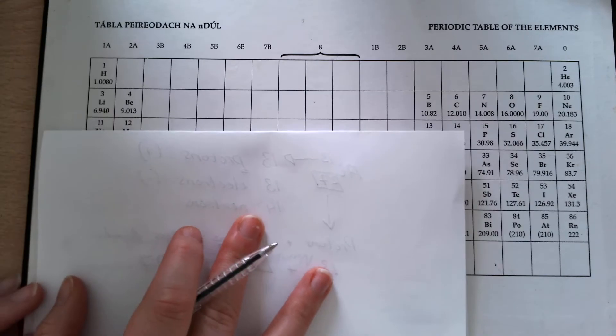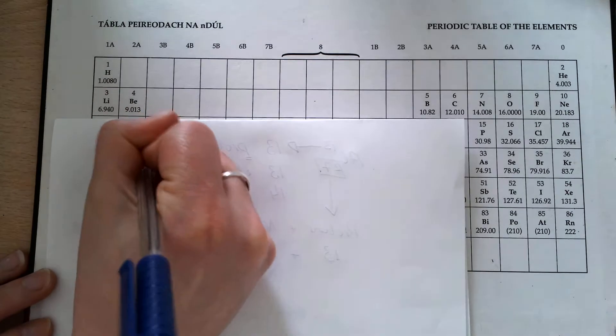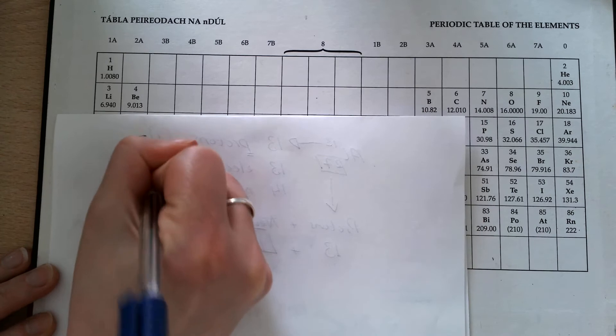I'm going to work through a second example here. This is lithium, nuclear formula, atomic number of 3, mass number 6.940.